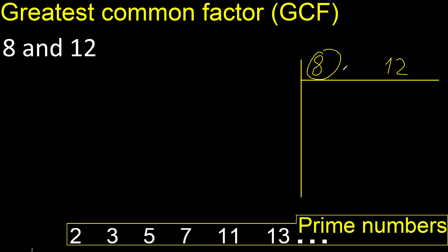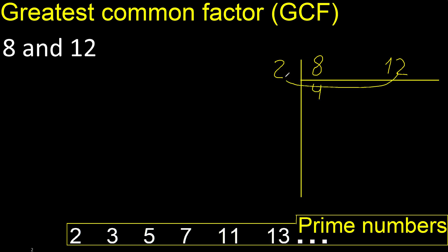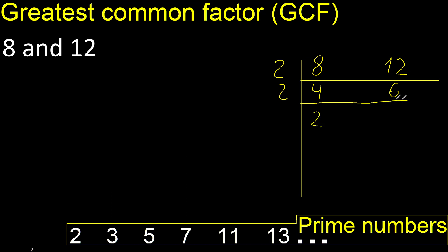Can 8 and 12 be divided by 2? Yes. Therefore, 8 divided by 2 is 4, 12 divided by 2 is 6. Can 4 and 6 be divided by 2? 4 divided by 2 is 2, 6 divided by 2 is 3.